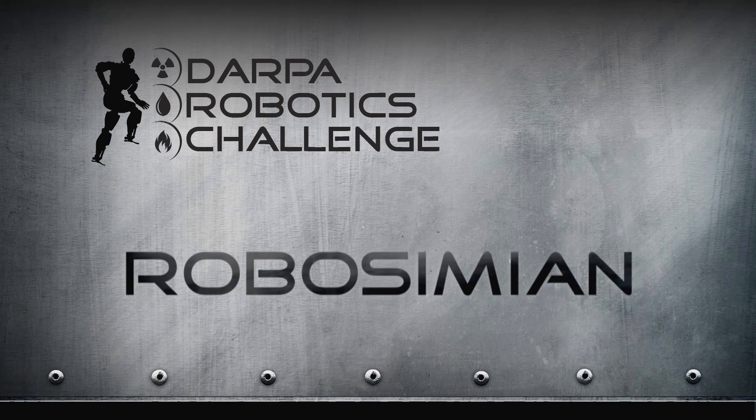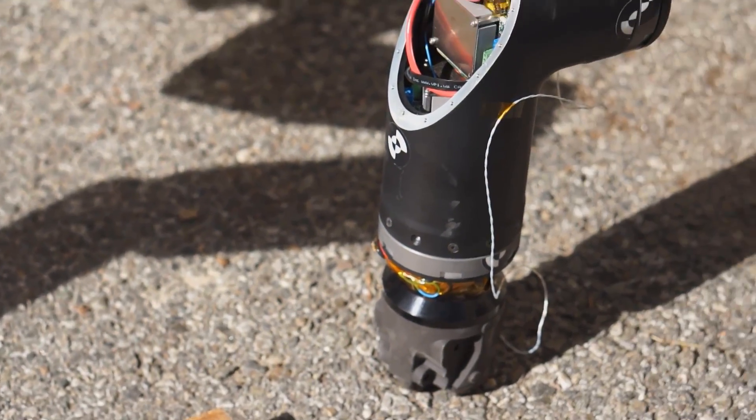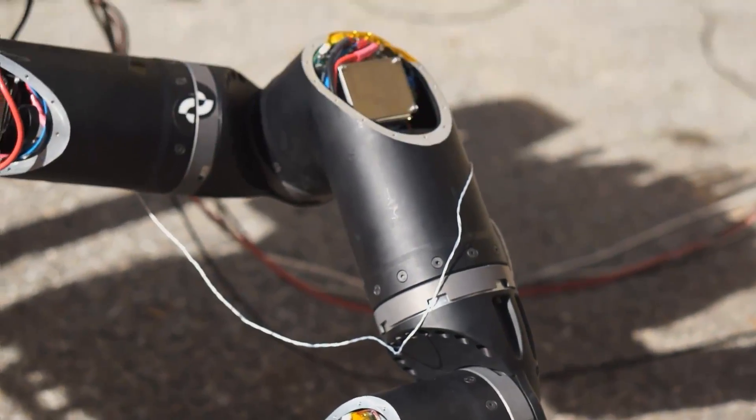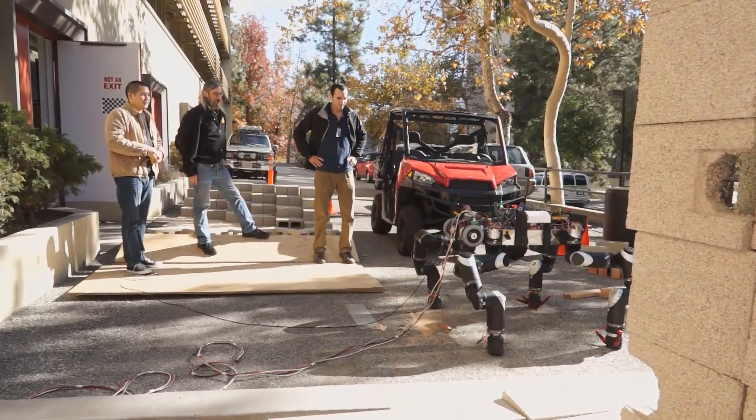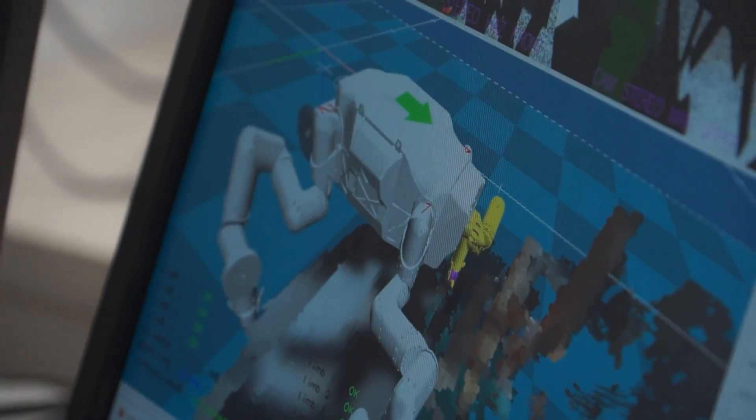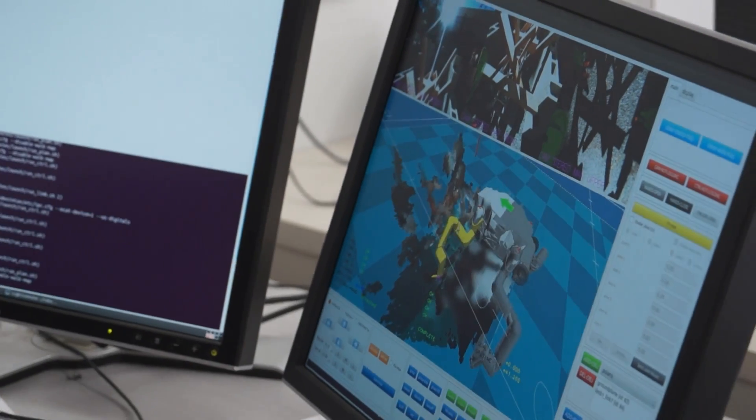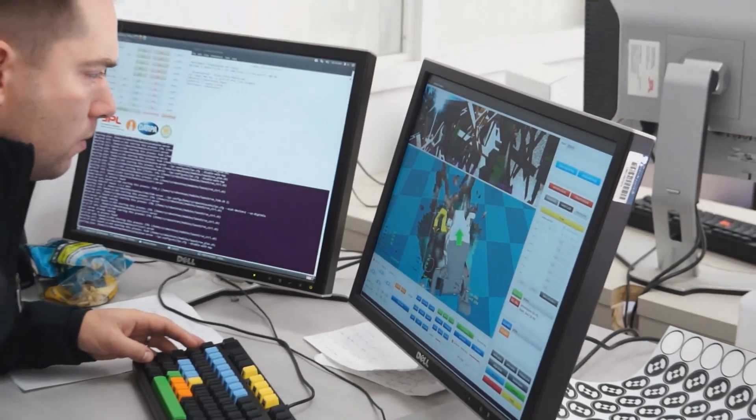RoboSimeon is a system that comes out of work we've been doing at JPL for a while in what we refer to as limbed robots. Limbed robots are based on the idea that rather than legs and arms, we create a limb that is capable of either manipulation or mobility.